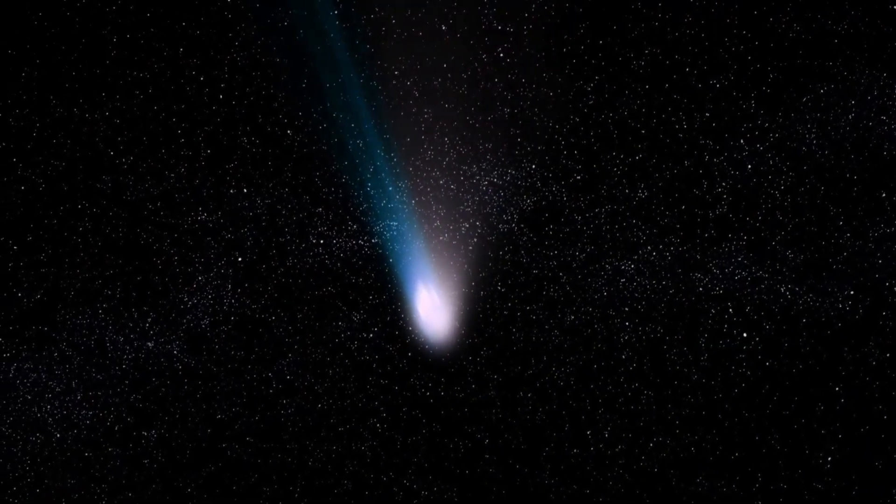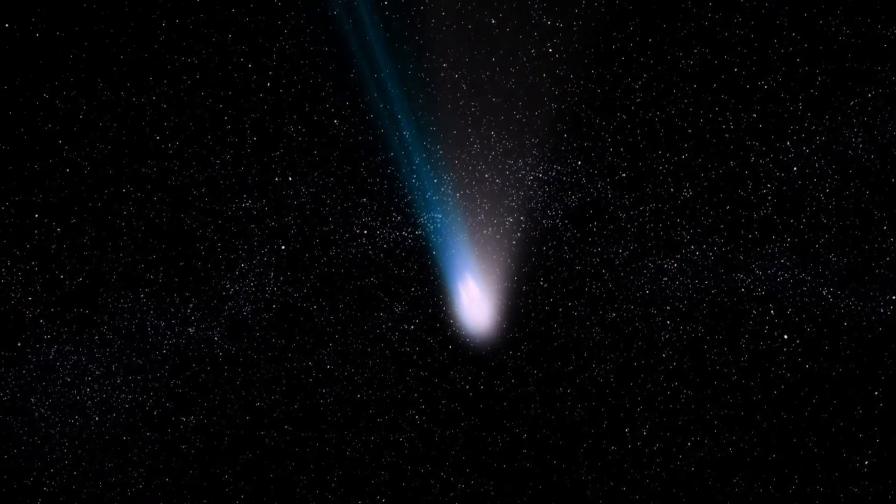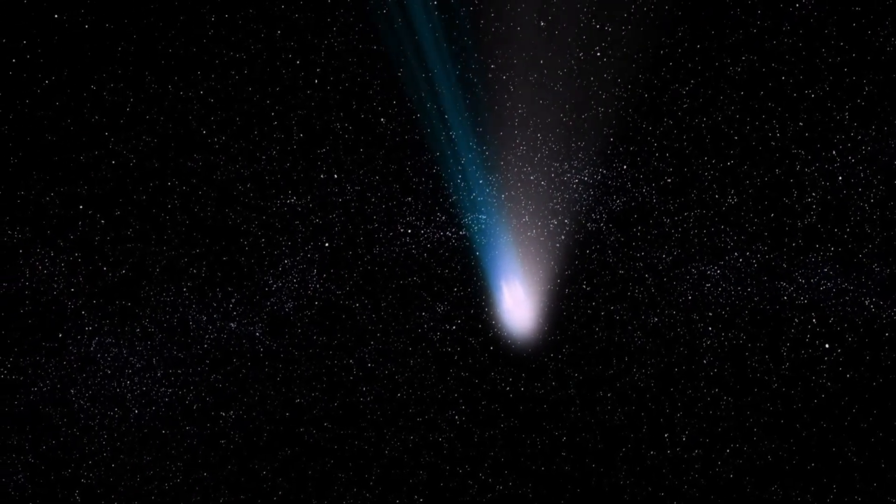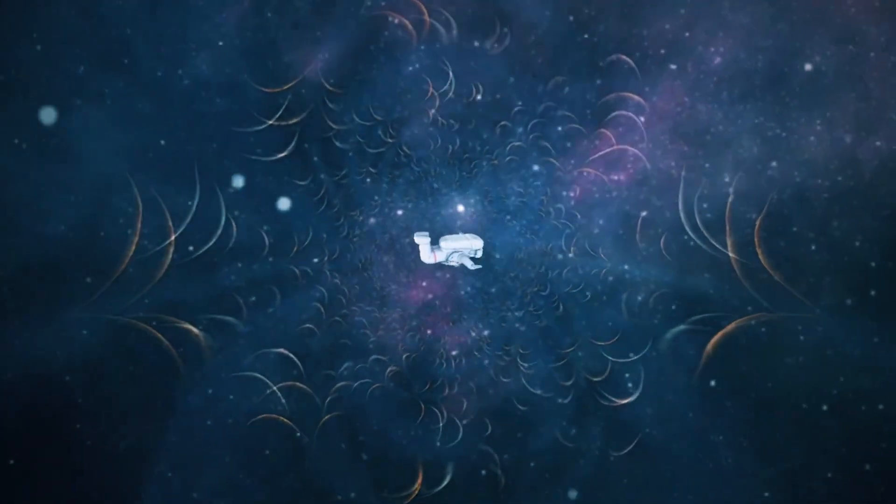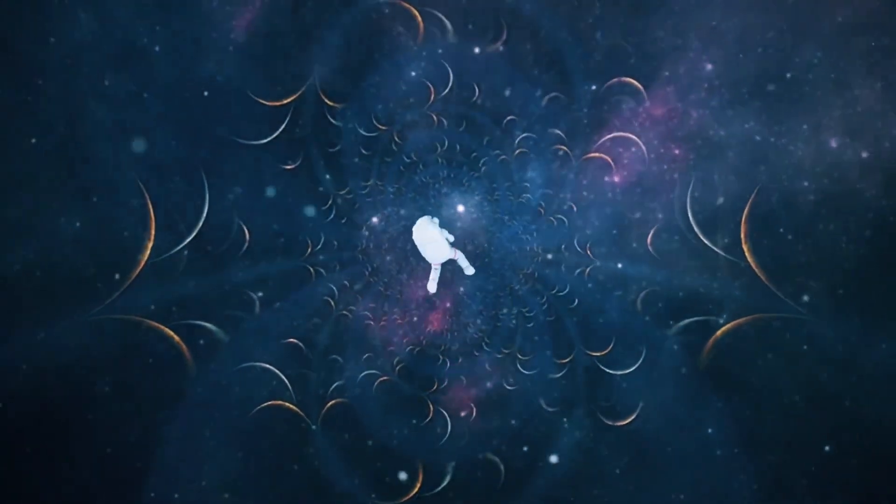The solar wind is a continuous outpouring of charged particles and magnetic fields that the Sun, like all stars, emits at hypersonic speeds, creating the heliosphere. This magnetic field extends into space, but eventually, it encounters resistance from interstellar matter, forming a boundary known as the heliopause.